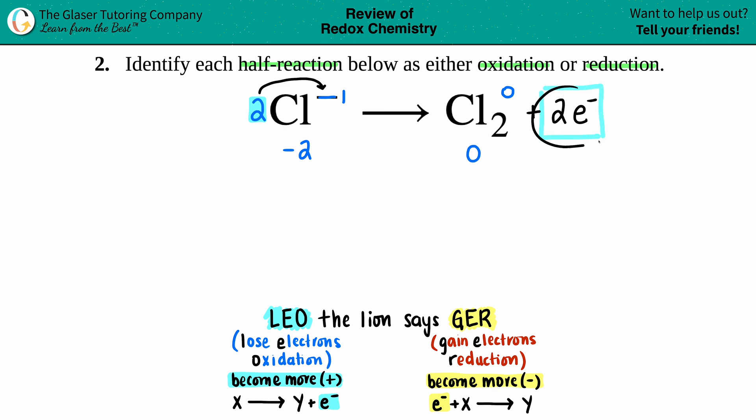And now since the electrons are on the right side, that means that you lost them, right? Electrons always on the right side is always oxidation. So now we can just say, hey, those electrons are over there, and there you go.